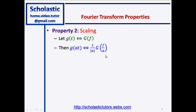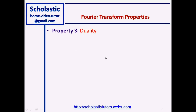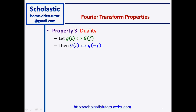Property number three is called duality. Again, we are given the function g(t) and G(f) in the time domain and frequency domain respectively. The duality theorem states that we replace the function g with capital G — basically what you get as the Fourier transform function in the frequency domain, you replace f with t to write G(t), and then if you do the Fourier transform of this function you will get g(-f).